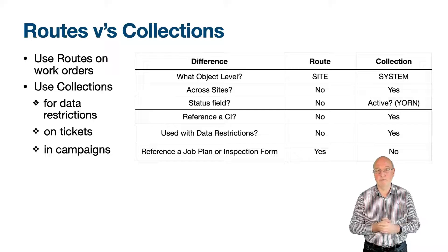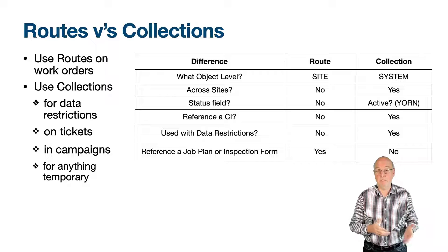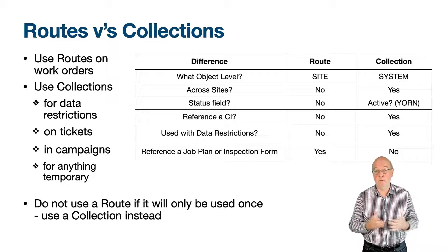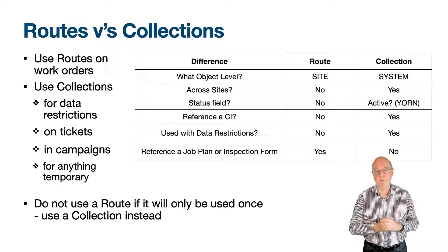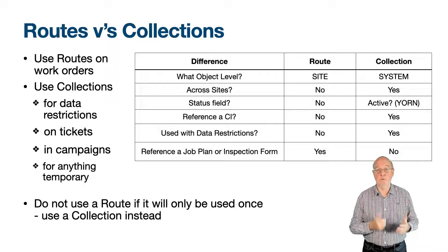You can quickly assemble a set of assets using the advanced search of the assets application, and similarly for locations. Collections are useful for anything which is temporary — a set of something which you assemble once, use on a ticket, and then delete afterwards. Do not create a route for something you only use once. Use a route for something you will add to a preventive maintenance record for frequency-based work. If you are creating routes for other non-linear reasons, it is likely you should be using a collection instead, and you will assemble the data much faster in a collection than you would using a route.